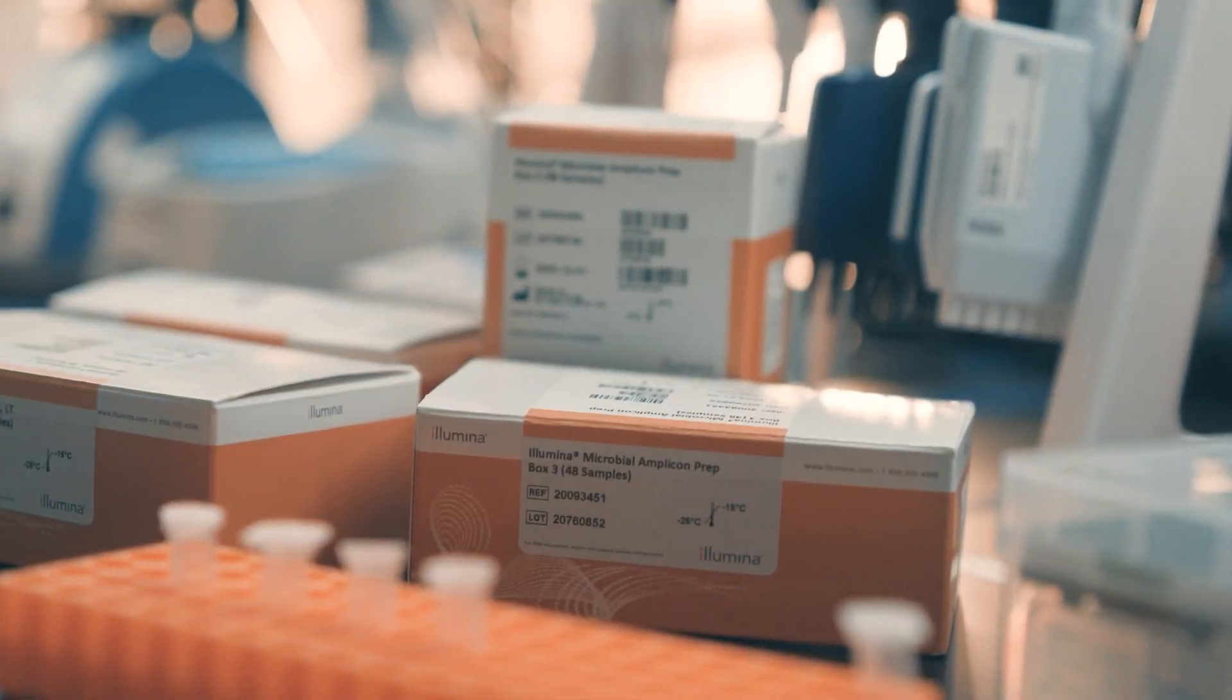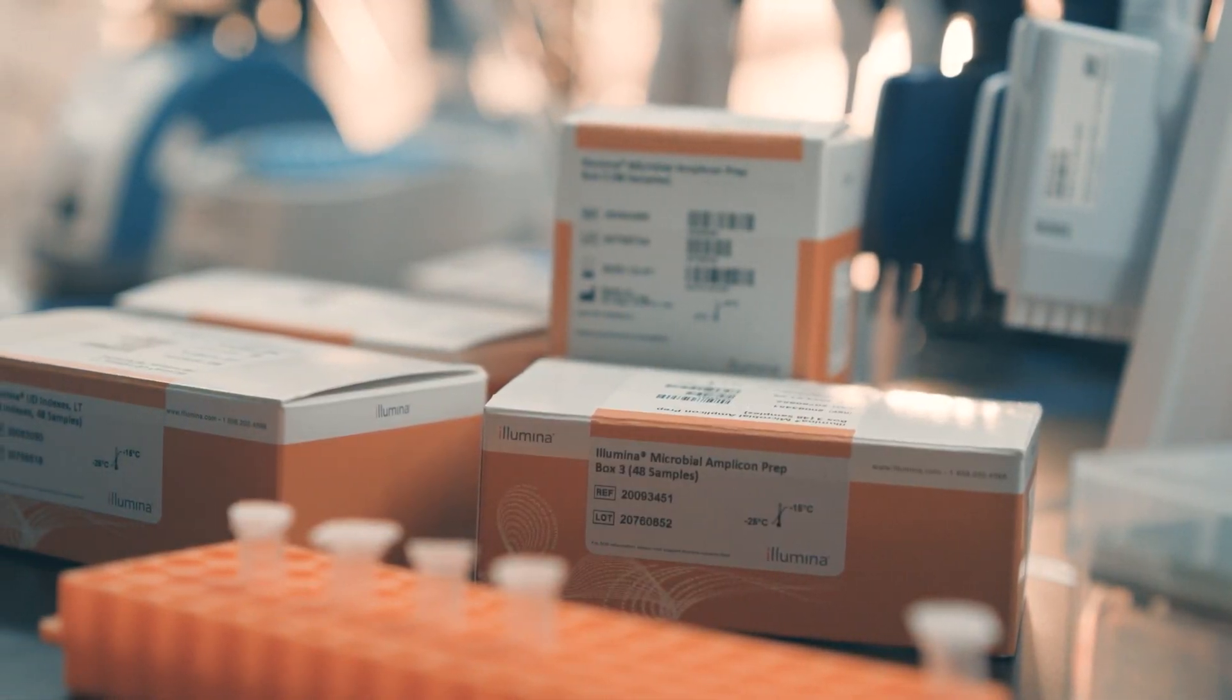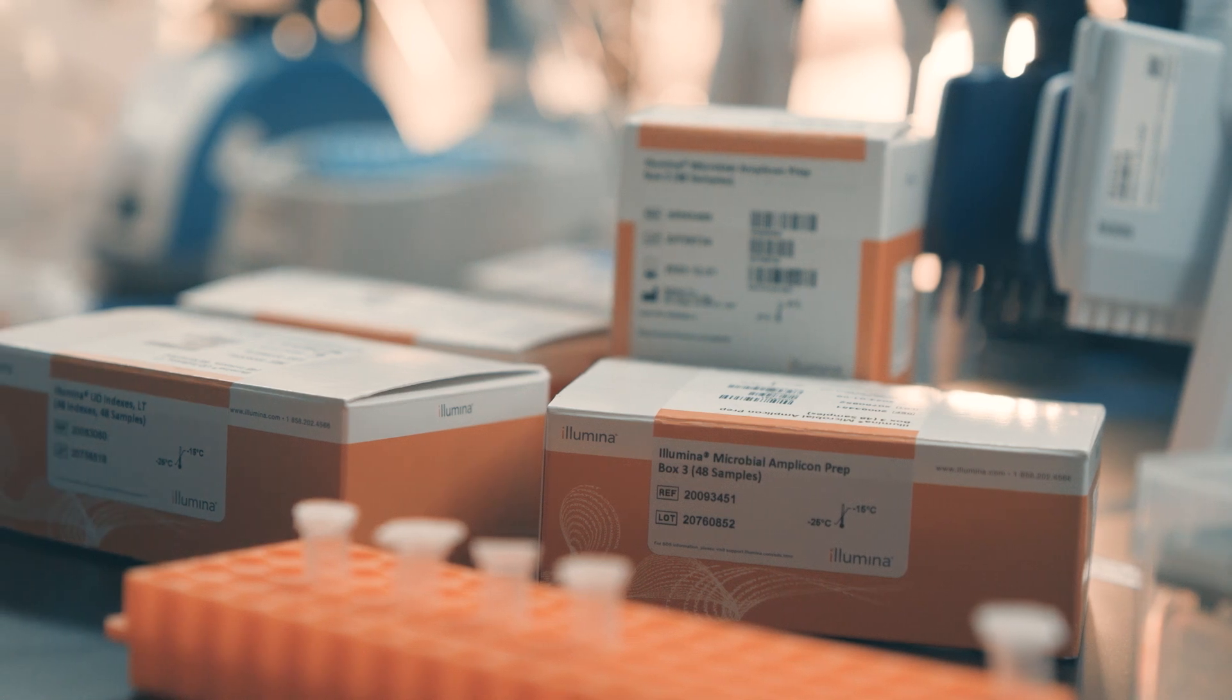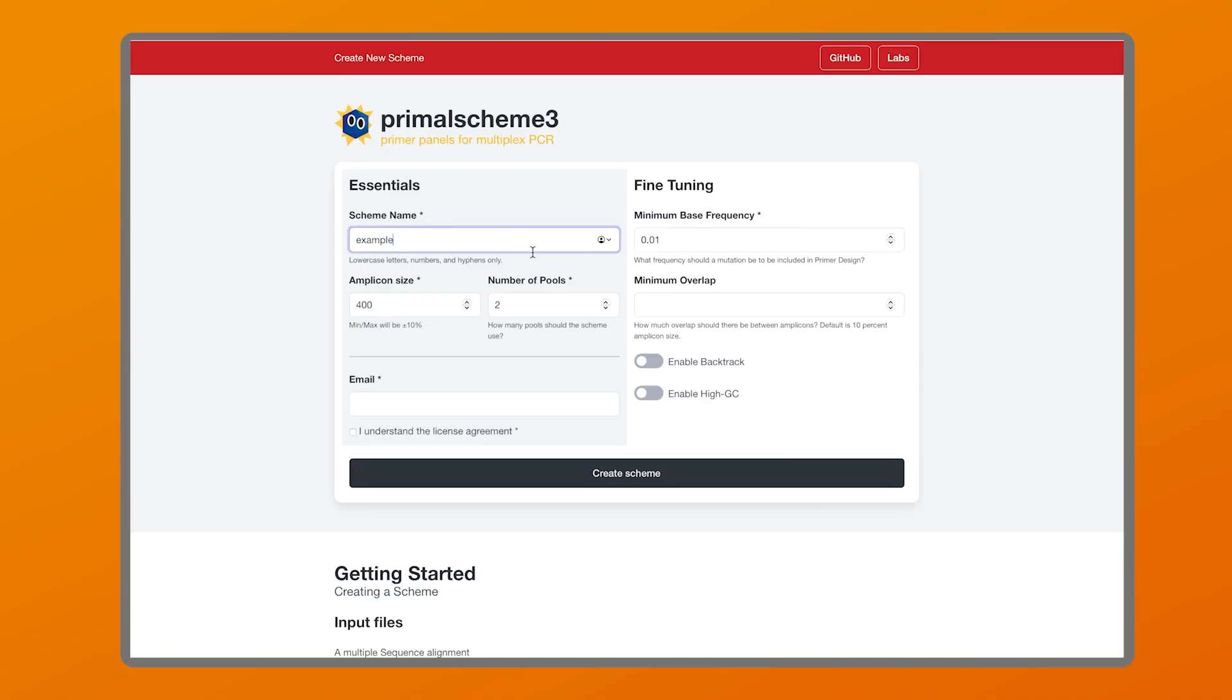Prior to running the IMAP assay, the user needs to design their primers for amplicon generation. The primer tool that we recommend for primer design is called Primal Scheme. This is an open source tool that is easy to use and can be accessed via a website.